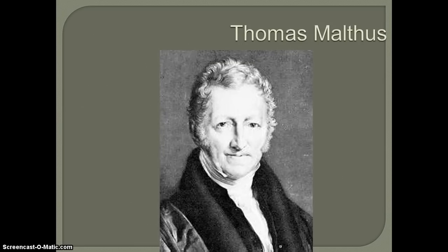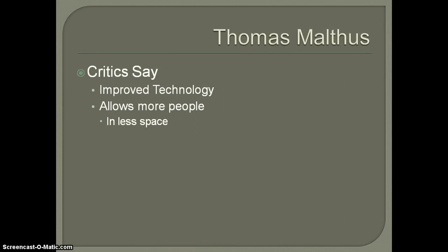Of course there have been critics of Malthus. We've really seen things happen over time that have allowed us to create more agricultural resources with less space, and we're actually able to provide for more people and fit more people in less space than ever before. One thing to mention is how he saw the growth of agricultural production versus population: he saw agricultural production as growing arithmetically, while he saw population growing geometrically — exponential growth in population versus very slow growth in agricultural production.